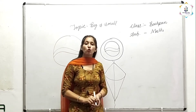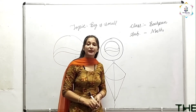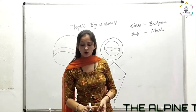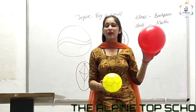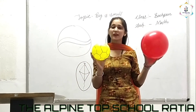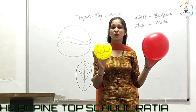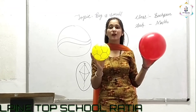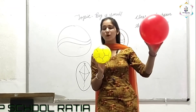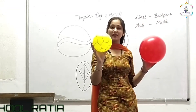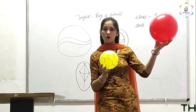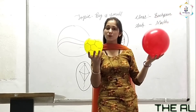Now I will show you some objects related to big and small. Tell me which is big and which is small. This is a big ball and this is a small ball.